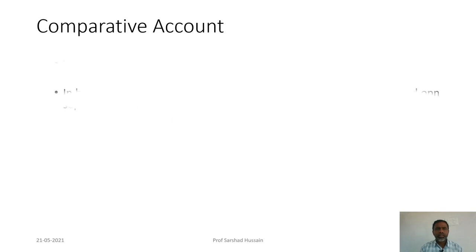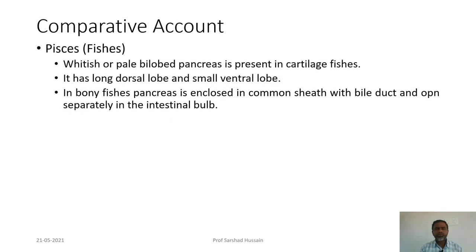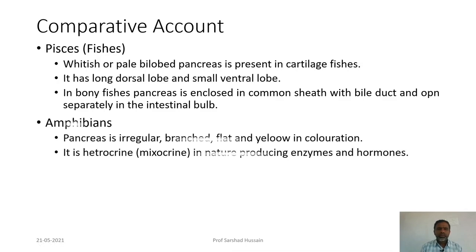Looking at the comparative account starting with fishes (Pisces): the gland is whitish and bilobed. In cartilaginous species it has a long dorsal lobe and a small ventral lobe. In bony fishes, the pancreas is enclosed in a common sheath with the bile duct and opens separately into the intestinal bulb.